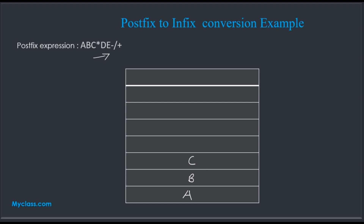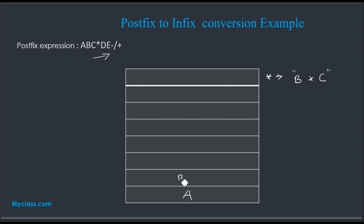Let's look at our example. We push operands onto the stack. When we encounter the star operator, we pop the two top values — B and C — and create a string. We push the string B star C back into the stack.